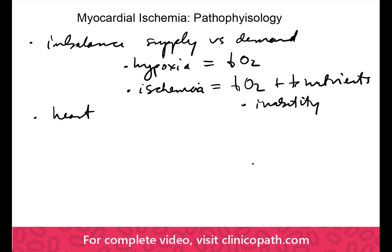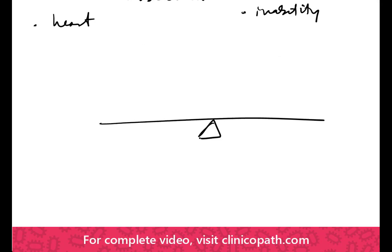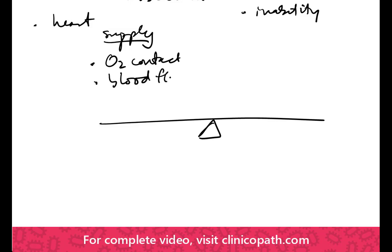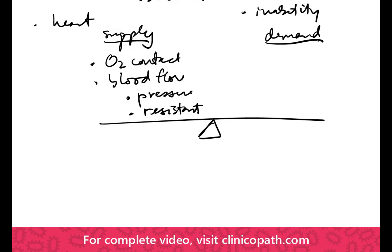When we talk about ischemia in the heart, we want to consider this balance between supply and demand — think of it as a teeter-totter. Supply is driven by the oxygen content of the blood and the actual blood flow. Blood flow is proportional to the perfusion pressure and the resistance of the vessel, which brings us to Poiseuille's law. On the demand side, the key parameters include wall stress, heart rate, and contractility.